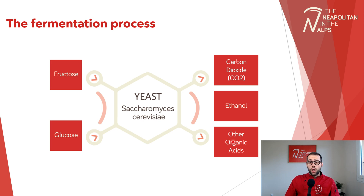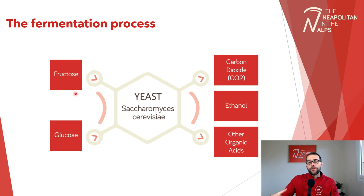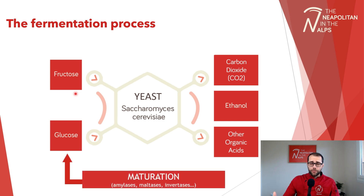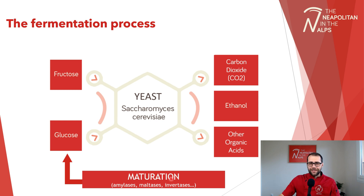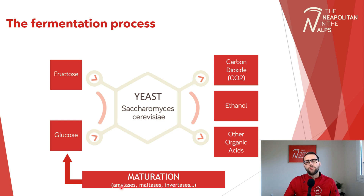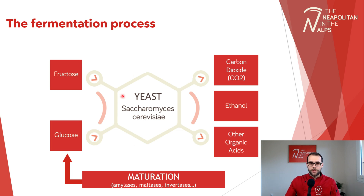It's worth mentioning that those simple sugars available in the dough are not there from the beginning. There is another process that helps the yeast access them, and that's maturation. We use this term to indicate all the enzymatic reactions that take place in the dough. The amylase enzymes are the main ones responsible for decomposing more complex sugars — starch in general. Then we have other enzymes — maltases and invertases — that allow the yeast to access fructose and glucose.